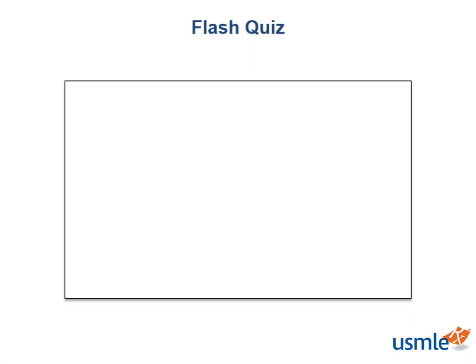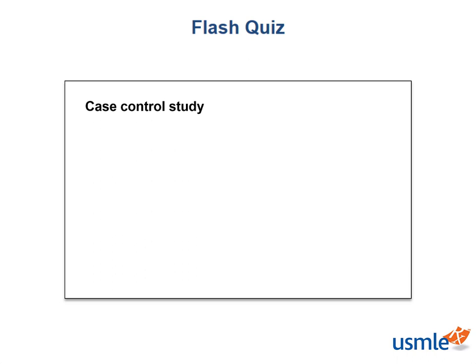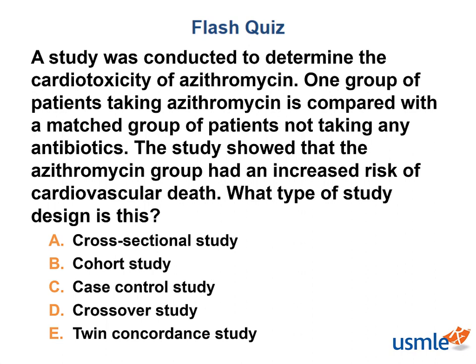Flash quiz time! Which study is designed to look at a group with disease and a group without disease, asking the question: what happened? The answer is case control study. Remember, a case control study looks into the past to see what events may have increased the odds of an outcome. Going back to the question from the beginning of the lecture, a study was conducted to determine the cardiotoxicity of azithromycin, a macrolide antibiotic.